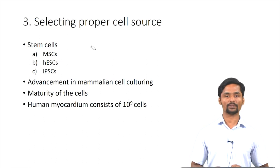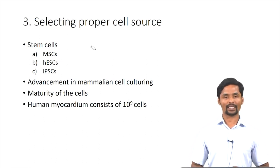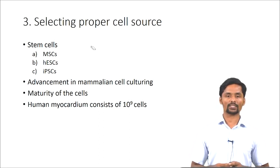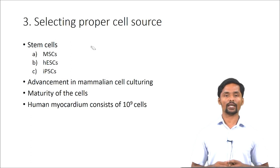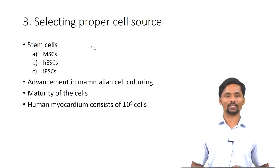The second stem cell type is human embryonic stem cells (hESCs), isolated from the inner cell mass of blastocysts. These stem cells are pluripotent in nature, meaning they are able to give rise to any cell type of the body. However, the problem associated with embryonic stem cells is the ethical concerns arising from extracting these cells from the embryo.